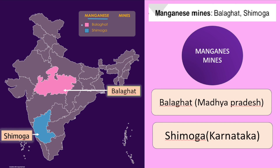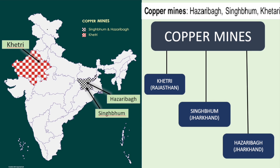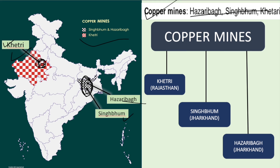Next is manganese mines — the areas include Balaghat in Madhya Pradesh and Shemoga in Karnataka. Next is copper mines — these are Singbhum, Hazaribagh and Khetri, of which Khetri is very important. Khetri is in the north-eastern part of Rajasthan. Hazaribagh is in the northern-central part and Singbhum is in the southern part of Jharkhand. So copper mines are: Hazaribagh and Singbhum in Jharkhand, and Khetri in Rajasthan.